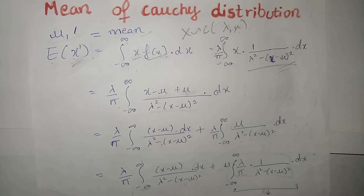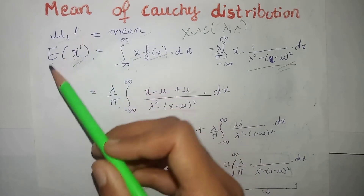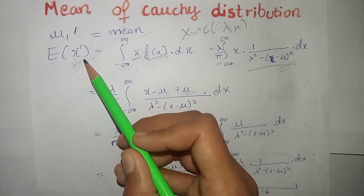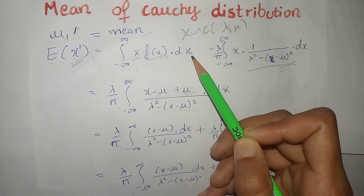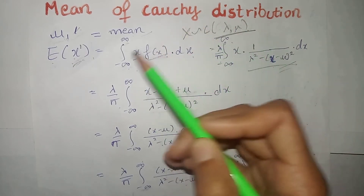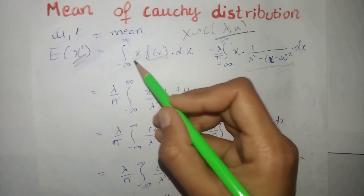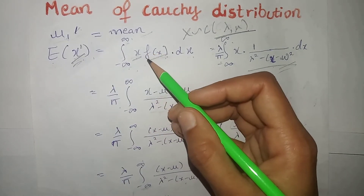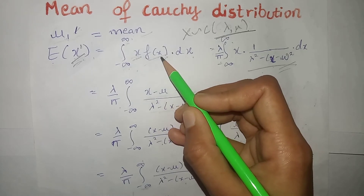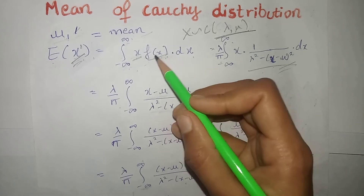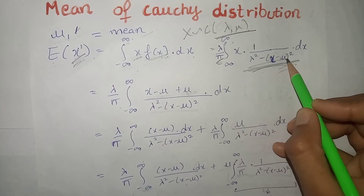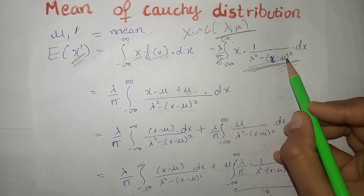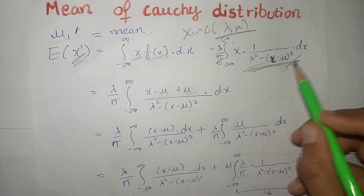Now we will find the mean of the Cauchy distribution, then the variance. We know that mean equals the first moment about the origin, which equals expectation of x. Applying the expectation definition as an integral over the full range from minus infinity to infinity, using the PDF of x for the Cauchy distribution with parameters lambda and mu, since this is a continuous distribution we use the probability density function.